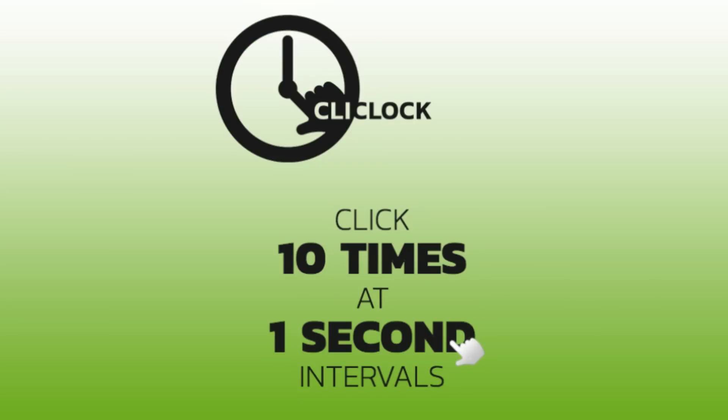Get better at feeling time by practicing your ability to guess the length of a second with Click Clock. The goal is to click ten times and leave exactly one second between each of your clicks. If it gives you a positive value you need to be quicker, but a negative value indicates that you didn't give enough time.